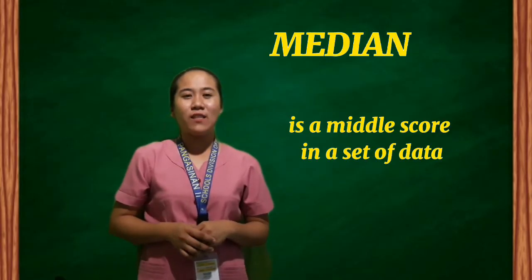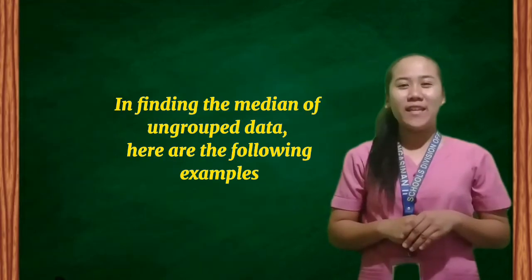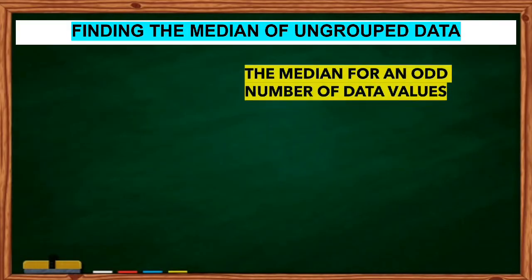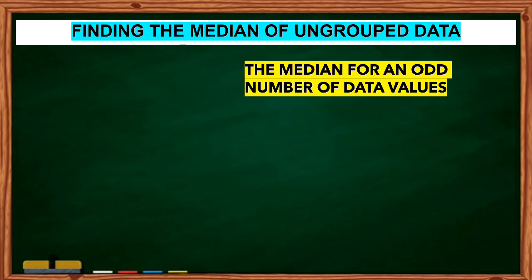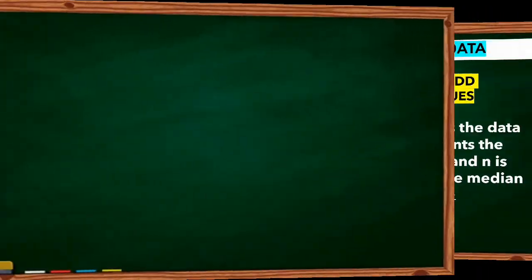Median is the middle score in a set of data. It is arranged from smallest to largest or vice versa. In finding the median of ungrouped data, here are the following examples. The median for an odd number of data values is the value that divides the data into half. If n represents the number of data values and n is an odd number, then the median will be found in the (n + 1) / 2 position.